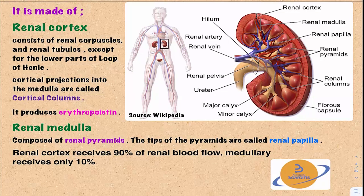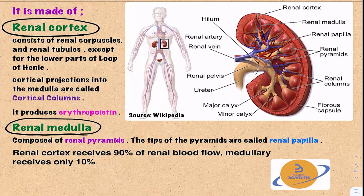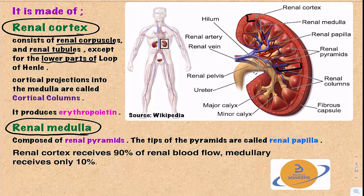The internal structure of the kidney is composed of the renal cortex and the renal medulla. The renal cortex is the outer part, and the inner part is the renal medulla. The renal cortex is composed of renal corpuscles and renal tubules, with the exception that part of the renal tubules — the lower part of the loop of Henle — are located in the medulla.